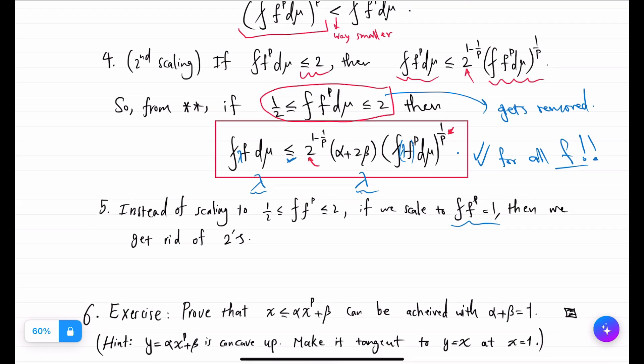And in that case if we trace all these inequalities above we will get rid of the 2's. So you will end up with integral average f less than or equal α plus β times integral average of f to the p.